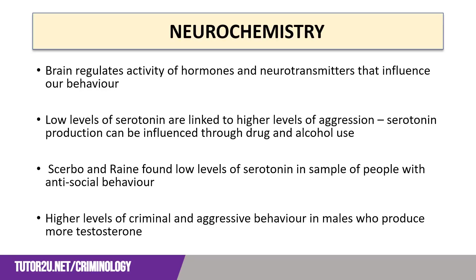A third example of brain abnormality that could cause crime is neurochemistry. Our brain regulates the activity of hormones and neurotransmitters that influence our behaviour, and several of these have been linked to behaviours that cause crime. For example, low levels of serotonin are linked to higher levels of aggression, and this can be exacerbated through the use of drugs and alcohol, as well as occurring naturally through mood disorders such as depression. Research by Scurbo and Raine found that people with lower levels of serotonin were also more likely to display antisocial behaviours than those with normal levels of serotonin.